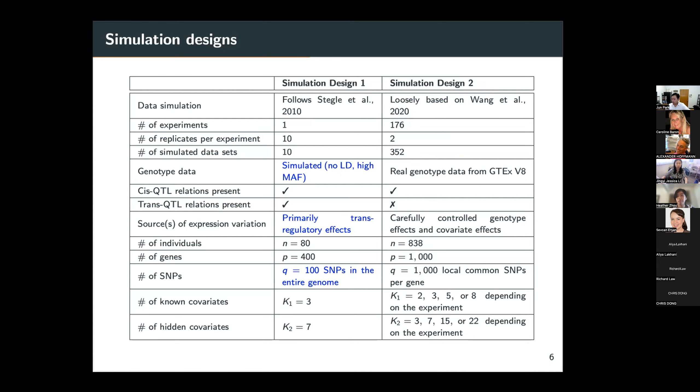So in our second simulation design, we followed the data simulation of Wang et al 2020, which is the publication of SUSIE, a fine mapping method. We found that this simulation design was quite reasonable and especially it carefully controls the effects of genotypes and covariates. Actually their simulation does not include covariates, but we extend that simulation method and also control the effects of the covariates in the simulations.